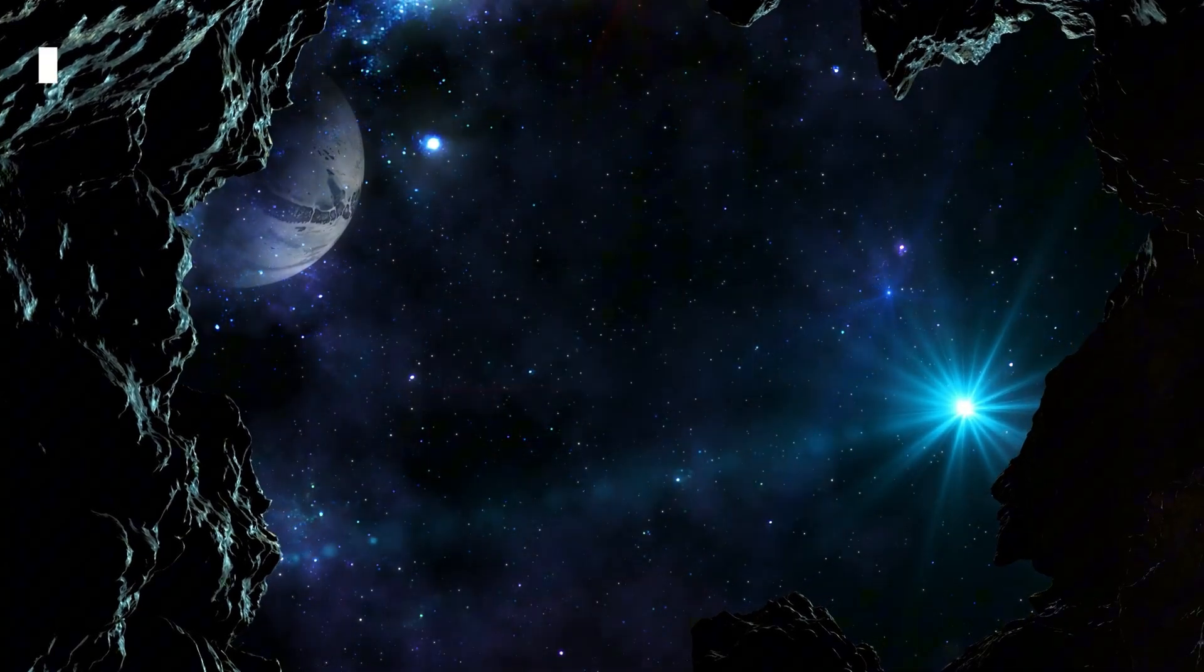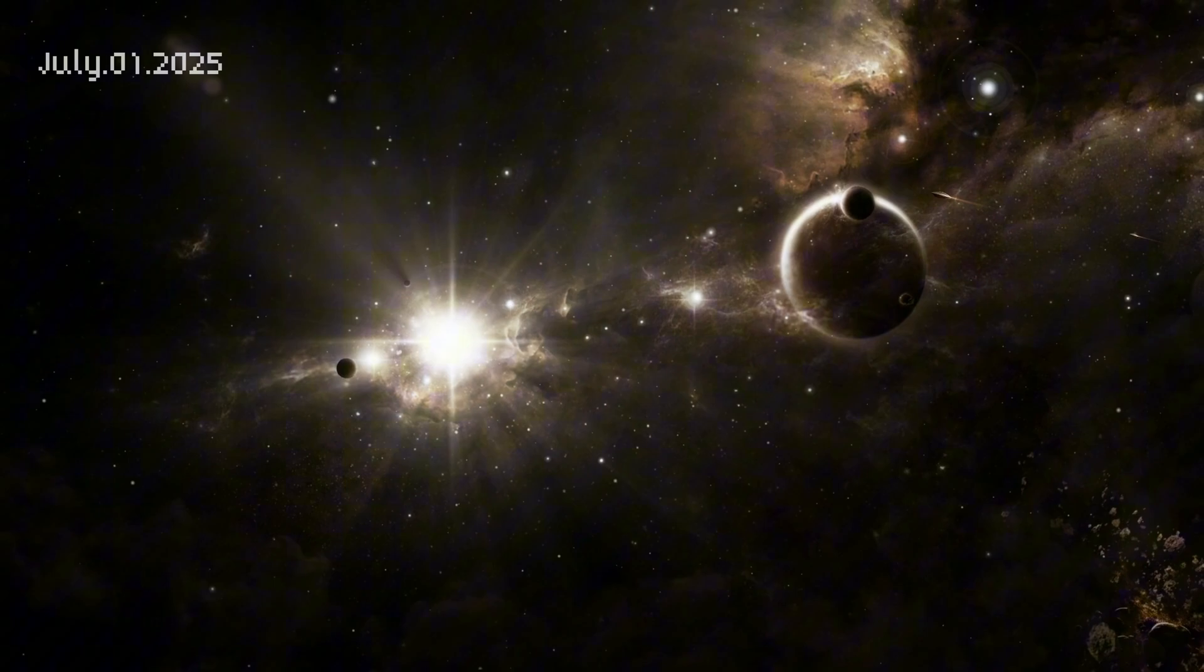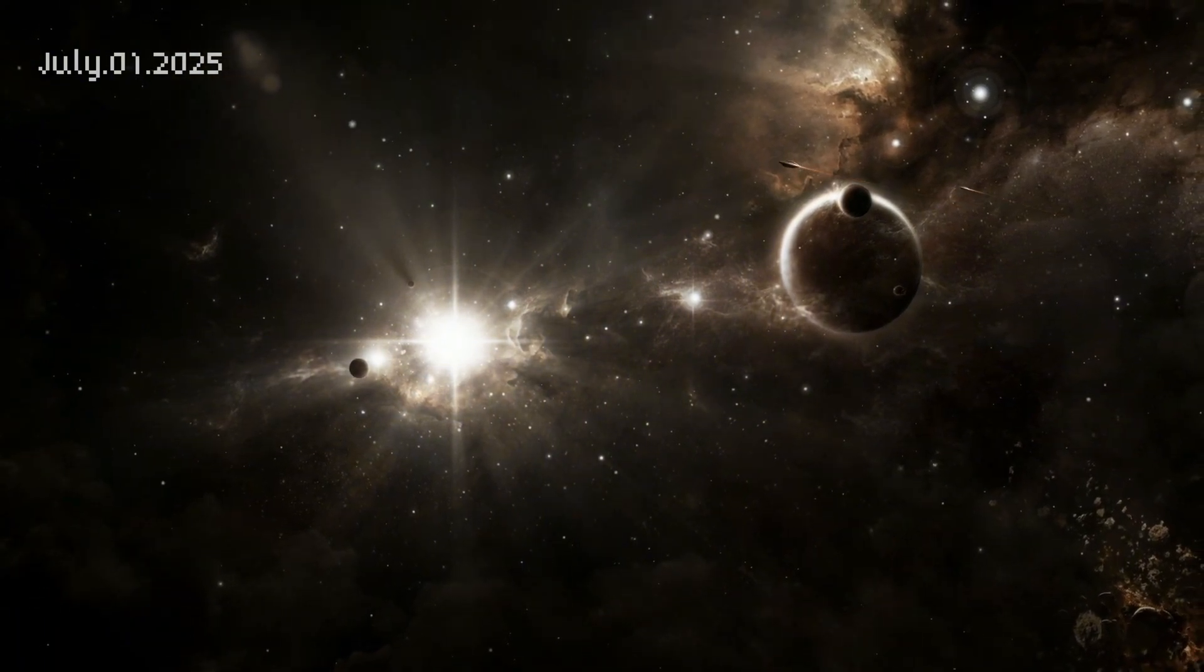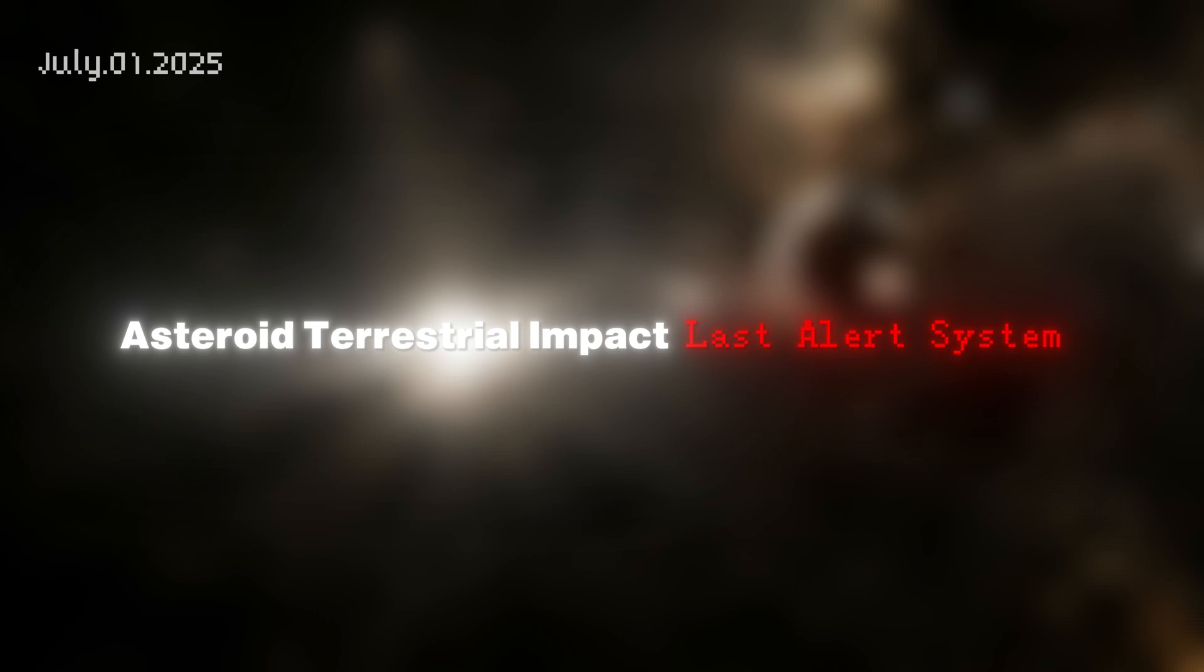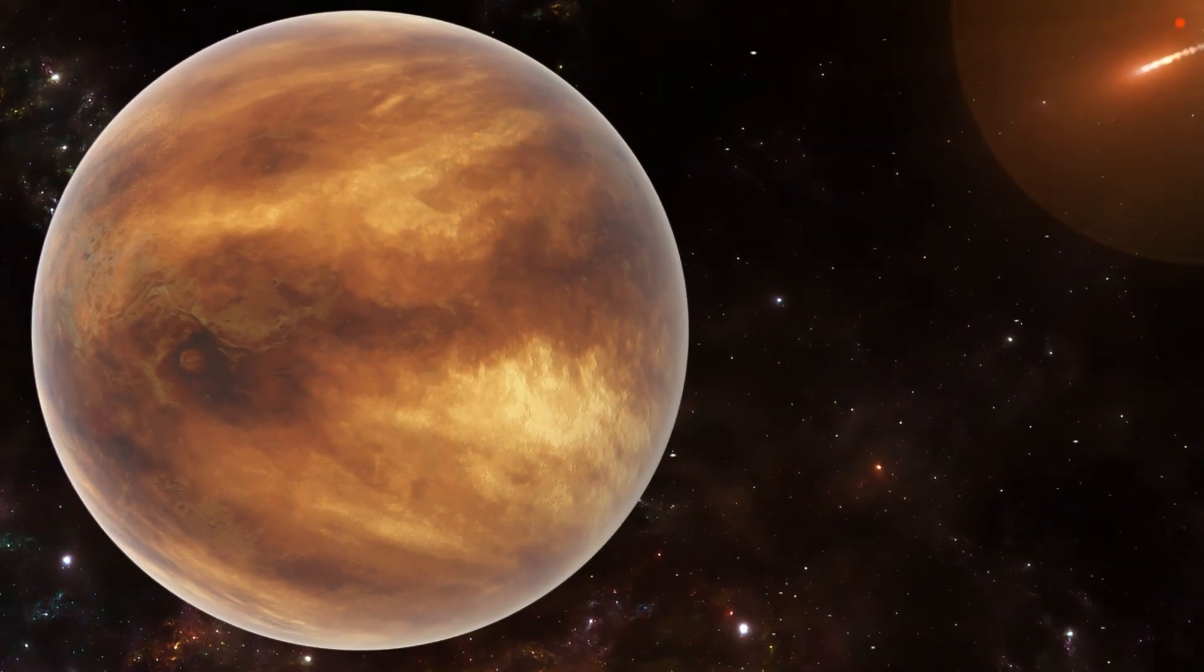Let me take you back to July 1st, 2025, when astronomers first spotted something that would challenge everything we thought we knew about comets. The Asteroid Terrestrial Impact Last Alert System, that's where Atlas gets its name, detected an object moving between Jupiter and Mars at impossible speeds.